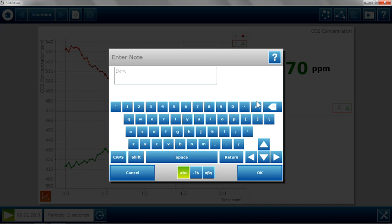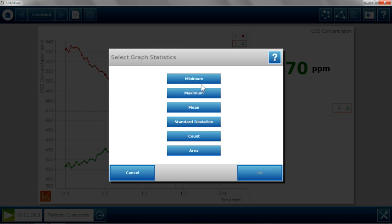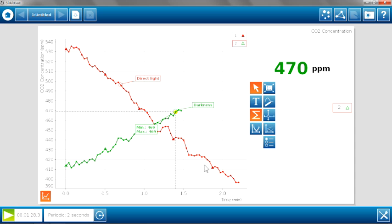And I could use the same statistics tools of minimum and maximum to find the change that occurred during the time period. Or I could also do a linear fit and find the slope and compare the slope for the change in CO2 in the darkness compared to the rate of change in the light.